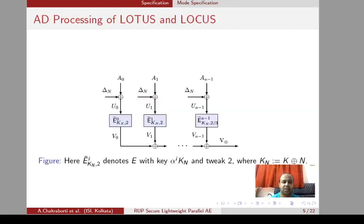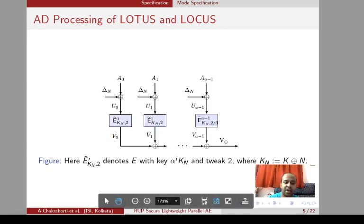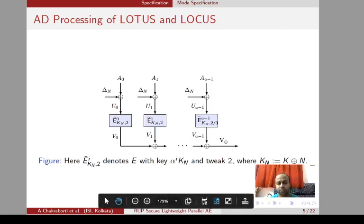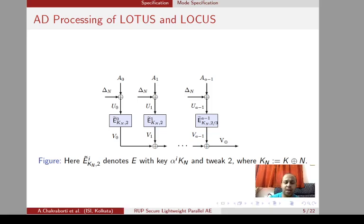LOTUS and LOCUS actually differ in the message processing phase, but the nonce and associated data processing phases are the same. In the nonce and associated data processing phase, we use a tweakable block cipher where E_K^i denotes the block cipher E with a nonce-dependent key alpha^i · KN, where KN equals K plus N. The tweaks here are used as domain separators rather than as a counter, which is an interesting structural feature of LOTUS and LOCUS.